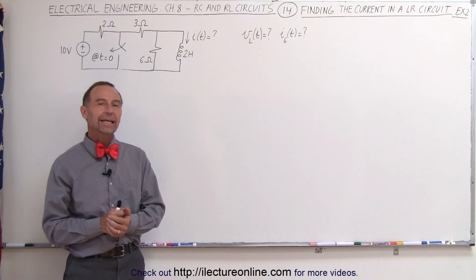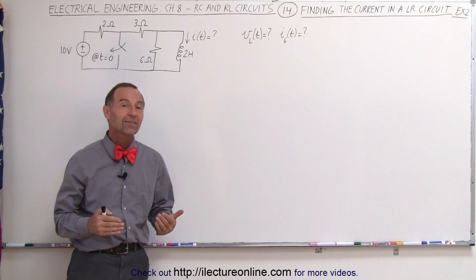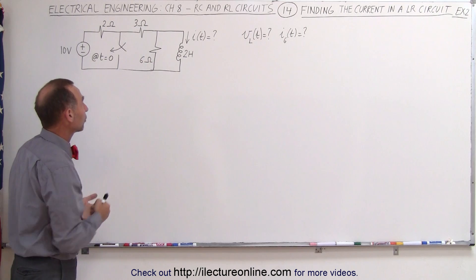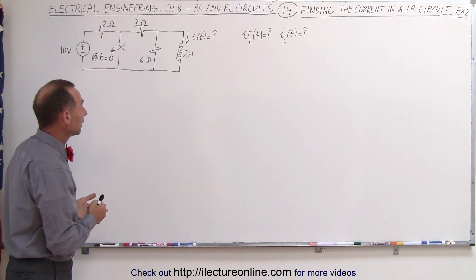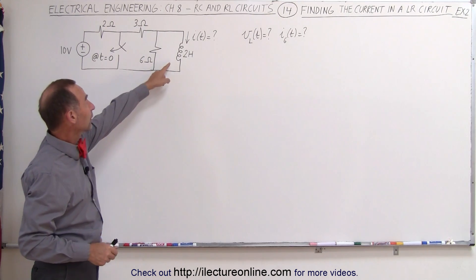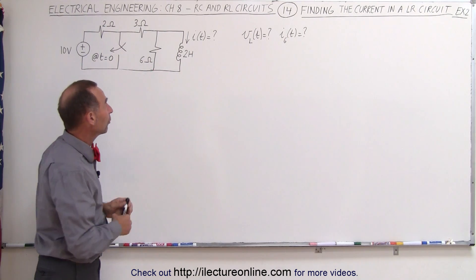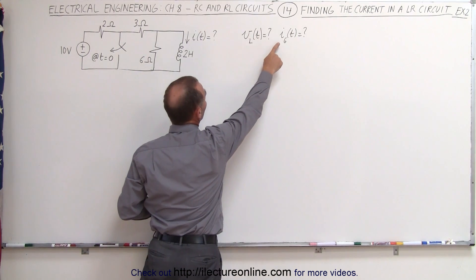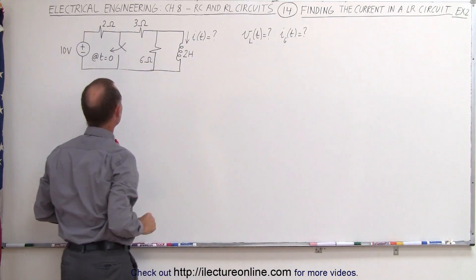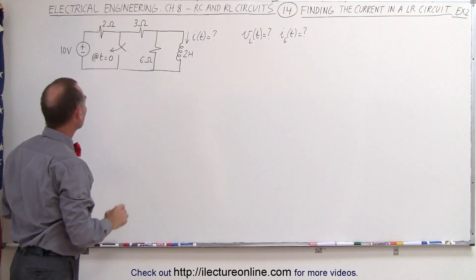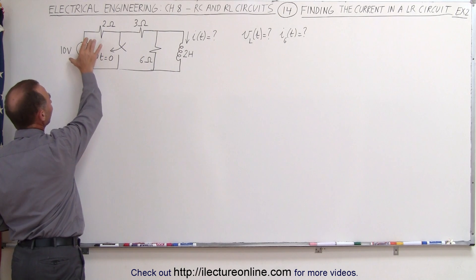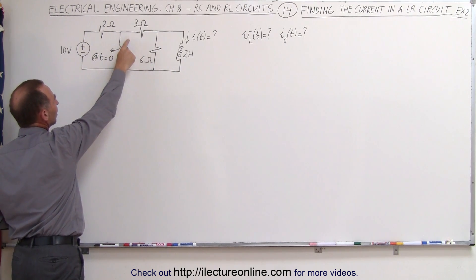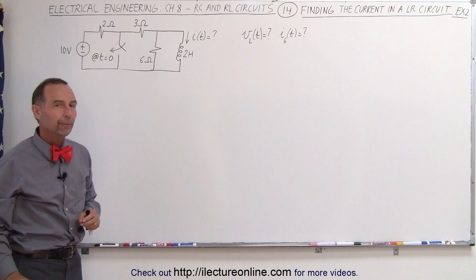Welcome to Electron Online. Here's our second example of how to find the current in an RL circuit. Not only do we need to find the current through the inductor, we're also being asked to find the voltage across the inductor and the current through the 6 ohm resistor. Notice here that we have a 10 volt voltage supply and we have a switch that closes at T equals 0.